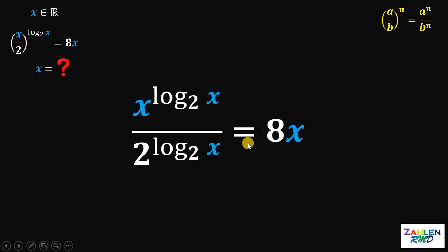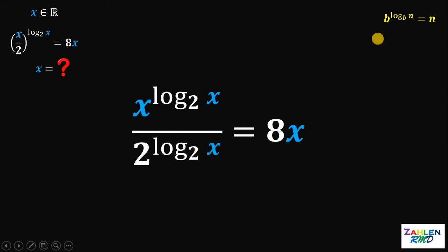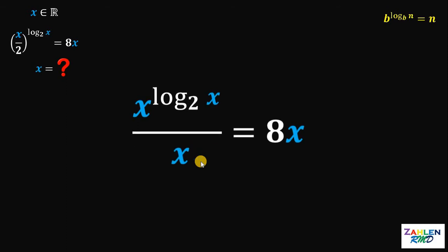At this point, let's focus on the denominator: 2 raised to logarithm of x to the base of 2. We will use a property of logarithm: if we have b raised to logarithm of n to the base of b, it is equivalent to just n. Therefore, 2 raised to logarithm of x to the base of 2 is just x.